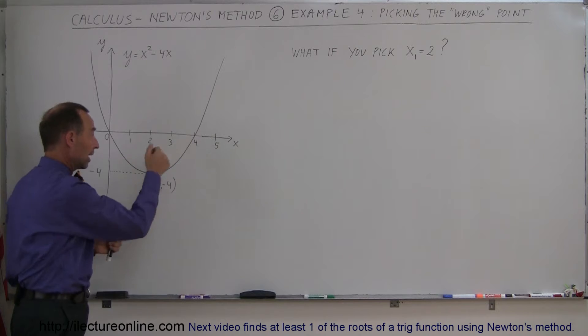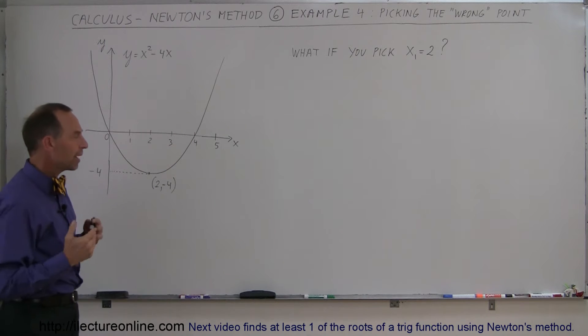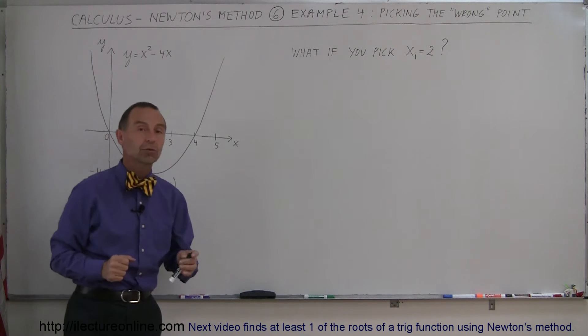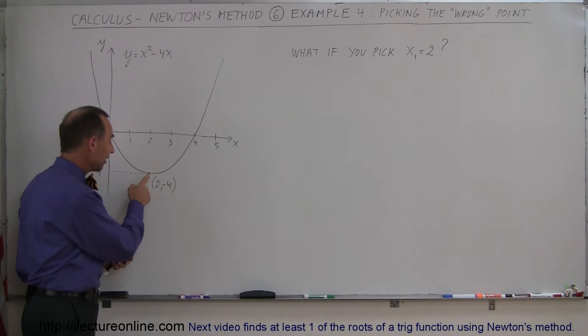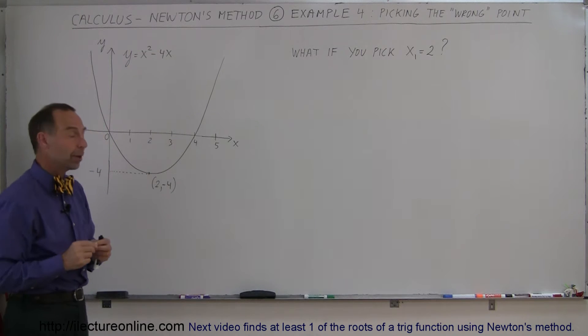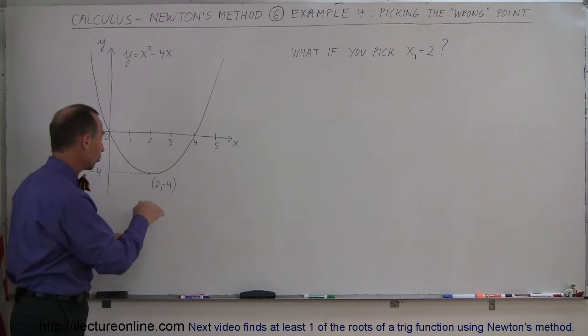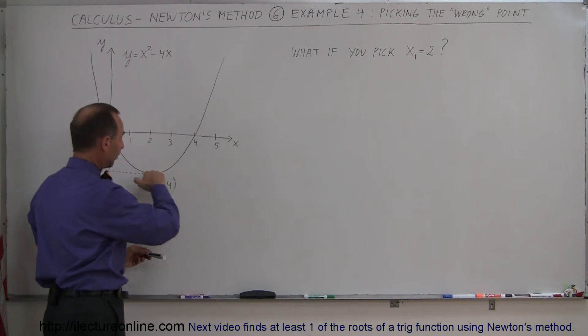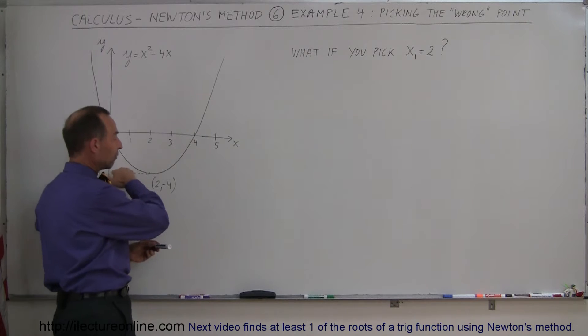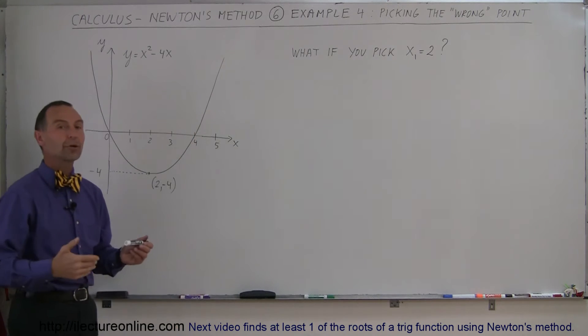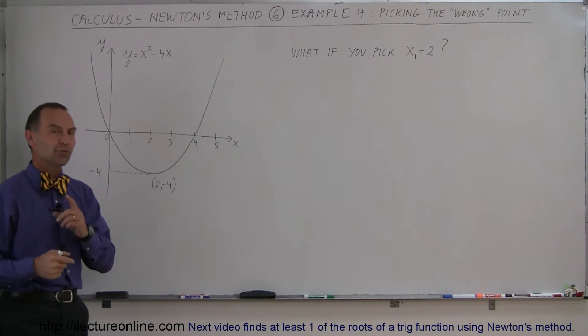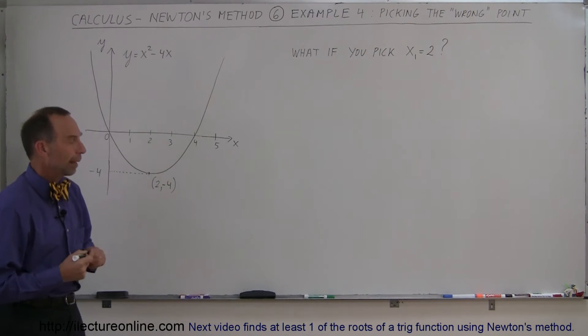In the previous example, we found the root x equals 4. But what if you, by accident, happen to pick a point - if you didn't know what the graph looked like, you may say, well, let me pick my first point x sub 1 equals 2. Notice that it's at the vertex of your parabola. And if you find the slope of that vertex, you find that the slope of the graph at that point will be 0. And of course, that means that the slope will never point towards your root. It'll point away from the root. And so you may find something very strange.